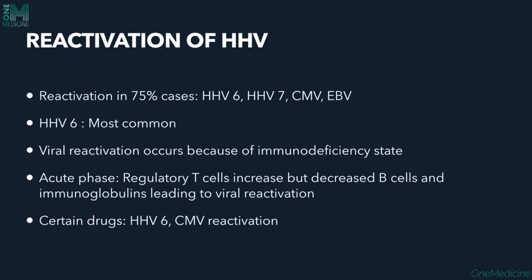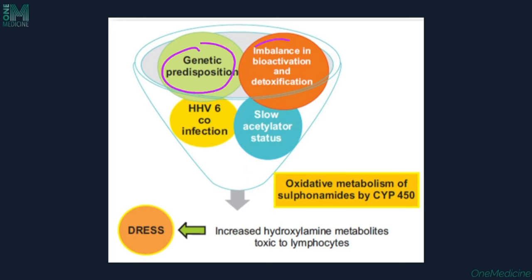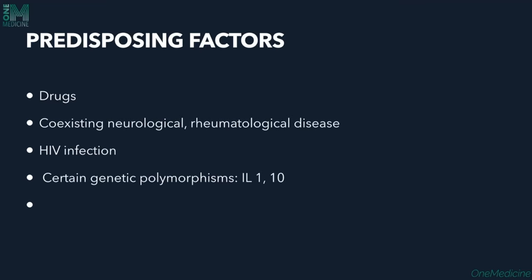Second, reactivation of human herpes viruses — in 75% of cases, including HHV-6, HHV-7, cytomegalovirus, and Epstein-Barr virus. HHV-6 reactivation is the most common. This occurs due to an immunodeficient state, where regulatory T cells are increased but B cells and immunoglobulins are decreased. This interaction of genetic predisposition, imbalance in bioactivation, HHV-6 co-infection, and slow acetylation leads to oxidative metabolism and DRESS.